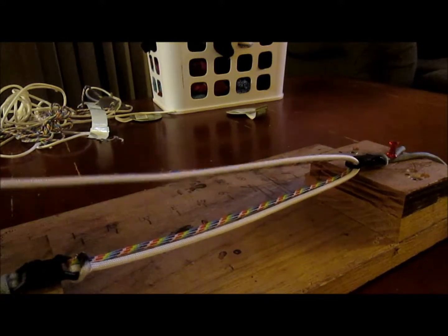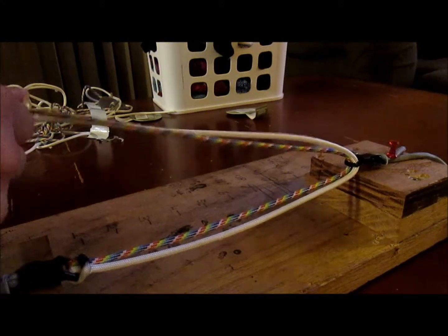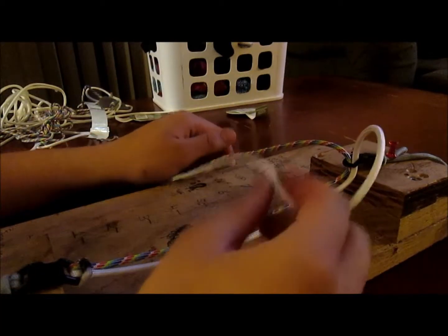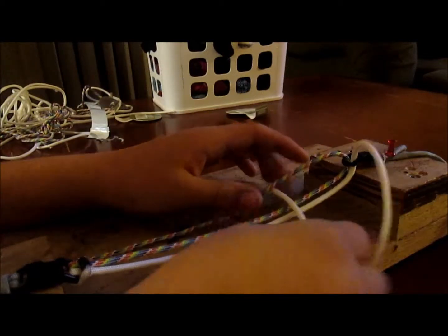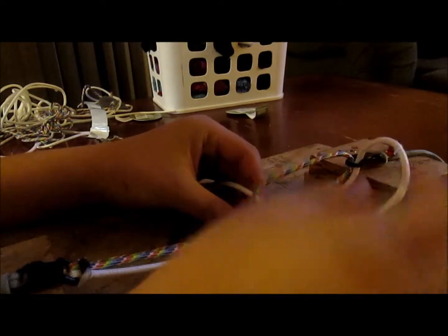Okay, now what you're going to want to do is whatever color you want in the middle, you're going to put it over. In this case, I want the white in the middle. Then with your other color, you're going to put it over that string. Then put it through this loop.